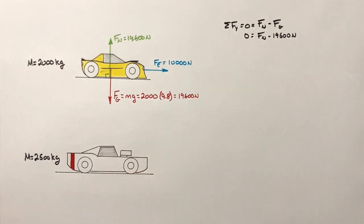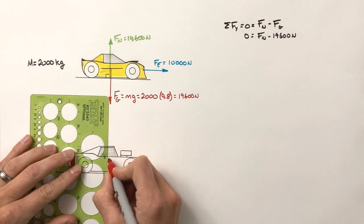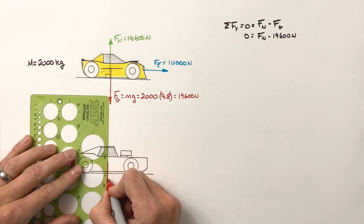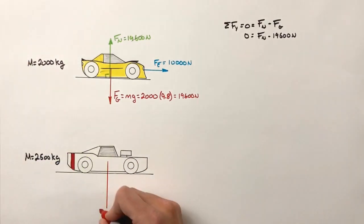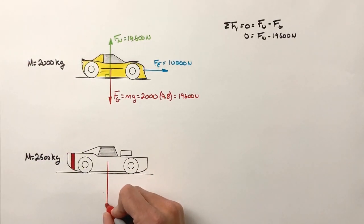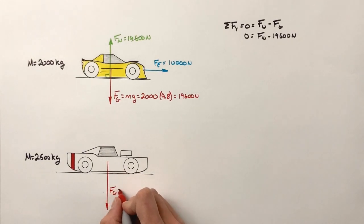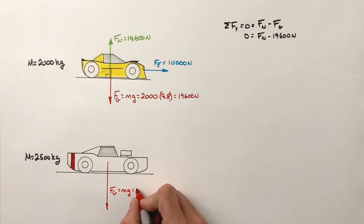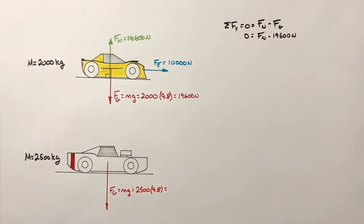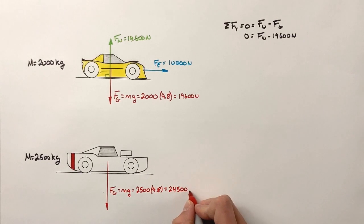Let's move on to this larger car. This car has a mass of 2,500 kilograms. So gravity is still acting downward on this car, just like the other car. The catch is, in this case, gravity is pulling a little bit harder — there's more mass here. The force downward by gravity, still calculated using mg, is going to be 2,500 times 9.8, which equals 24,500 newtons. So this is the weight of the car.